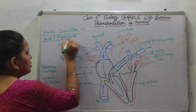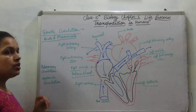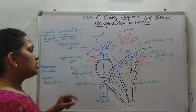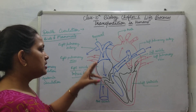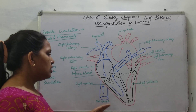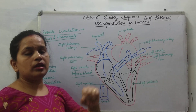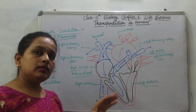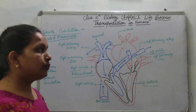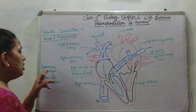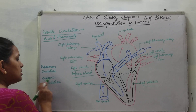In this circulation, two flows occur. First is pulmonary circulation. In this circulation, the right auricle and right ventricle are involved. The right auricle receives impure blood and sends it to the right ventricle, where blood goes to the pulmonary artery and then to the lungs for purification. It is called pulmonary circulation.